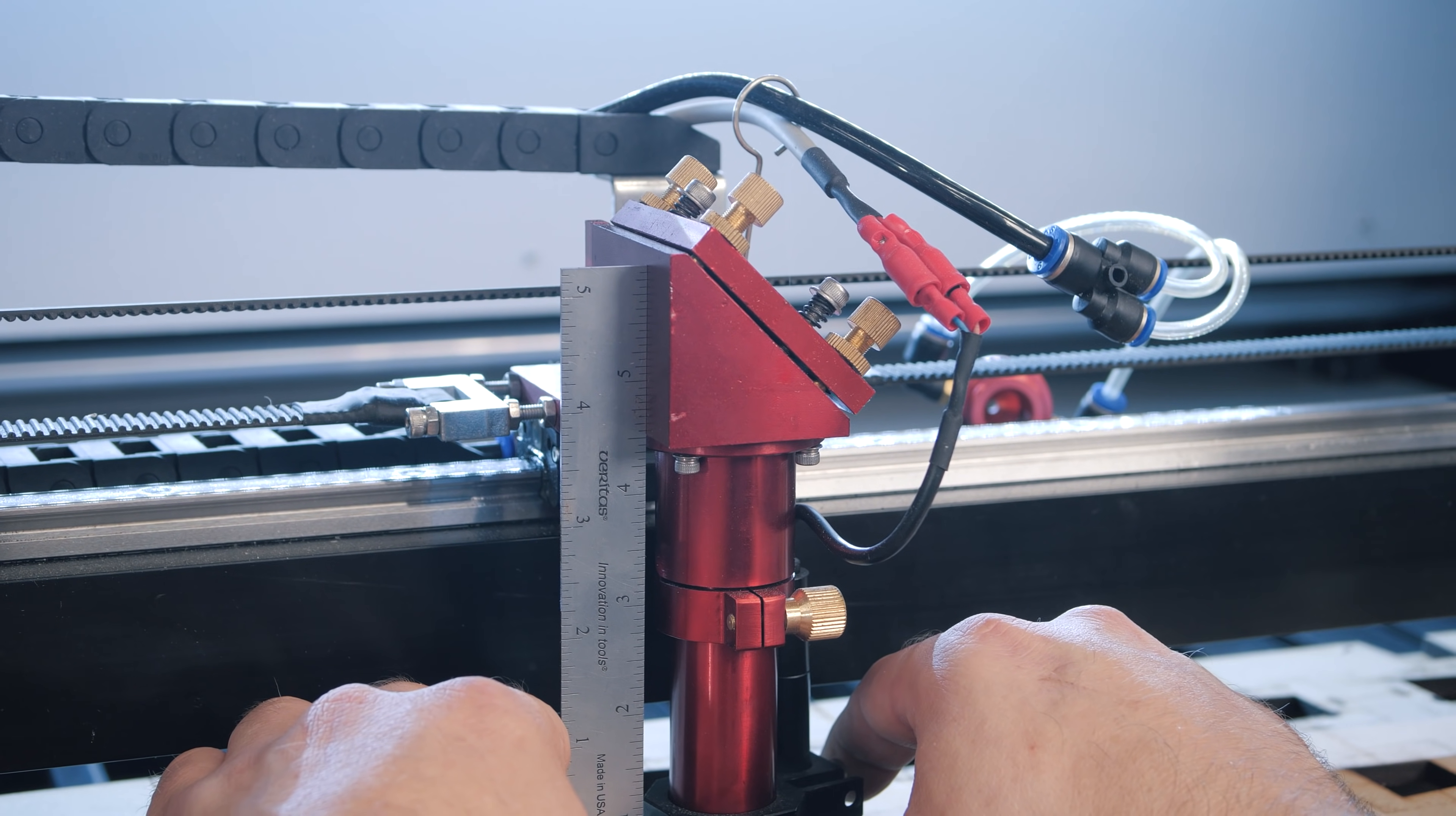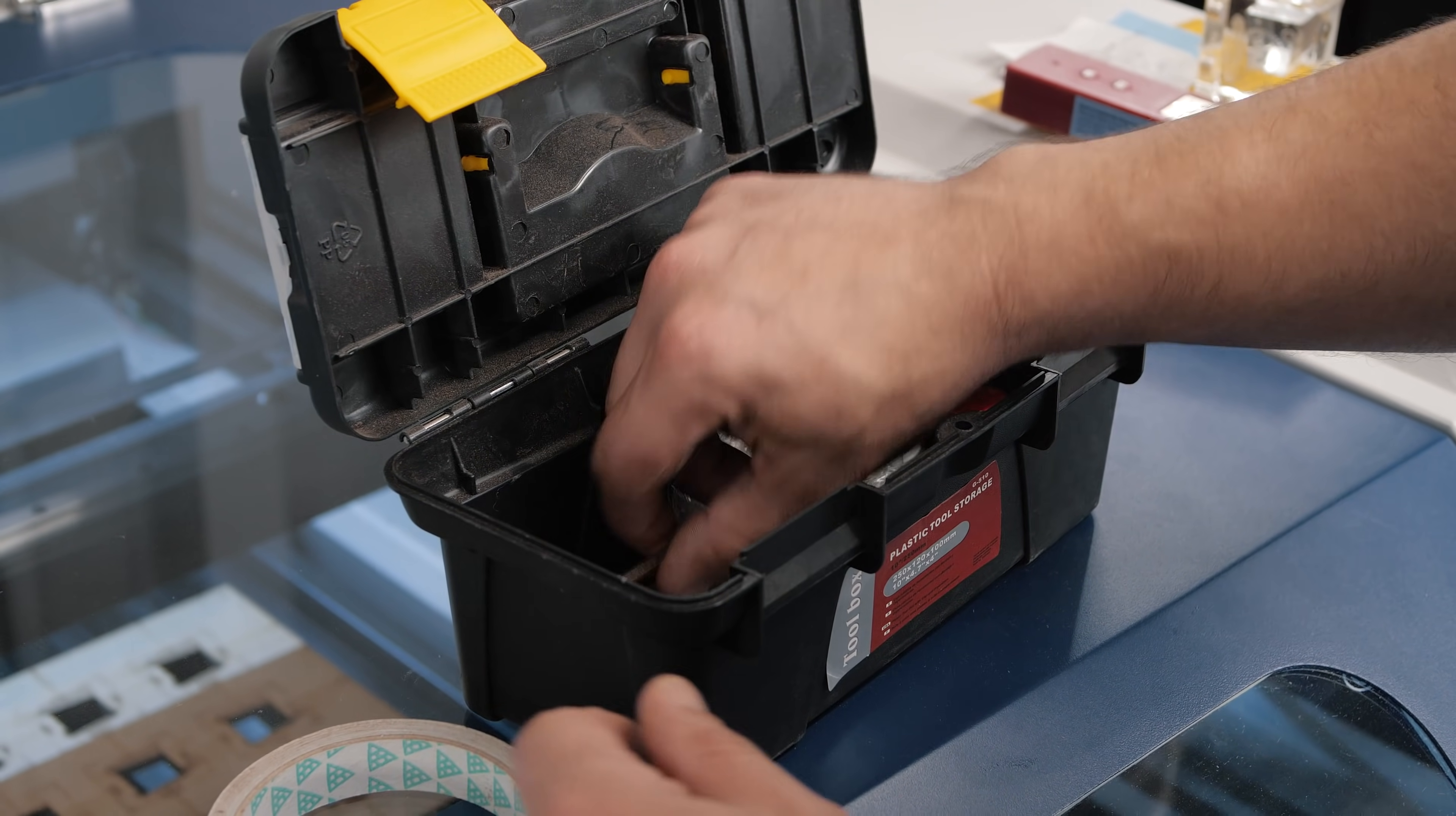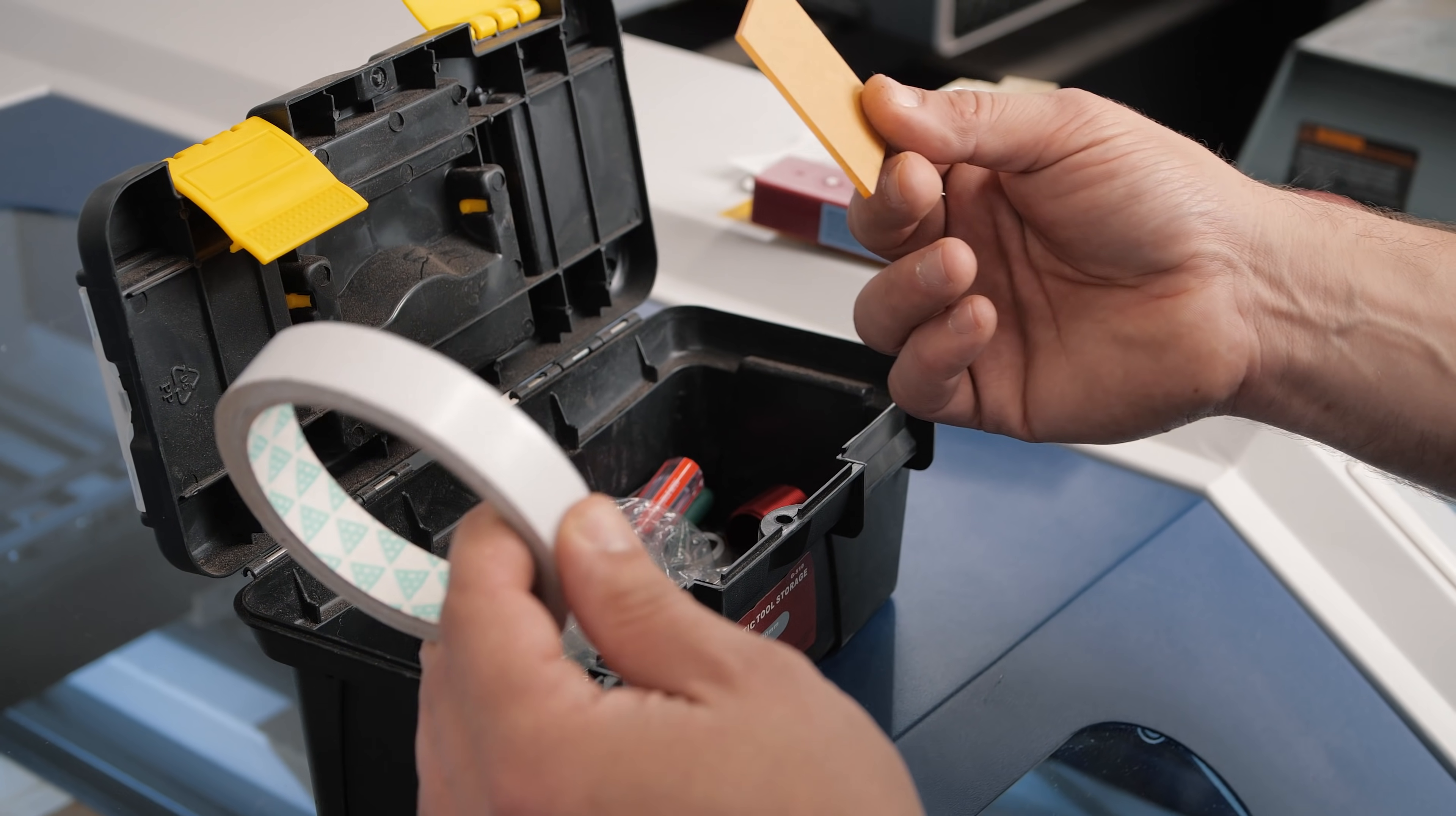One of the cool things about my laser is it came with this toolbox with a bunch of little tools—some double-stick tape, some acrylic. This is what we're going to use to align our laser. If yours didn't come with it, just get some scrap acrylic—I think this is an eighth inch thick—and some double-stick tape would be really easy to align it. Let's talk about the mirror controls before we get into it.